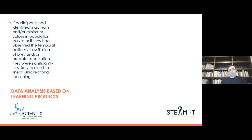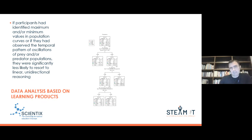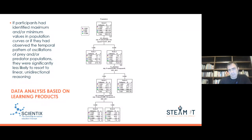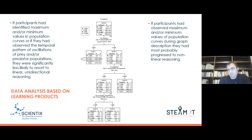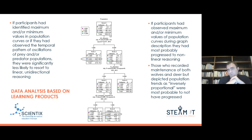When we analyzed results from the learning products further, we found that if participants had identified maximum and/or minimum values, or observed the temporal pattern of oscillations, they were significantly less likely to resort to linear unidirectional reasoning. A tree diagram shows that if participants had observed maximum and minimum values, they had most probably progressed to nonlinear reasoning. However, even if they recorded the maintenance of both wolves and deer in this hypothetical biotope, they could still describe population trends as inversely proportional and were most likely to not have progressed to nonlinear reasoning.